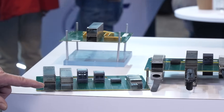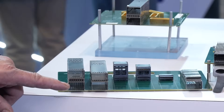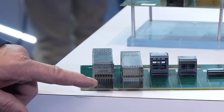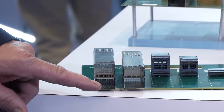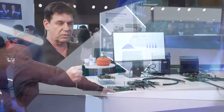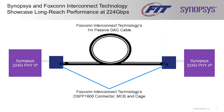If you look at the cage closely you can see there is a riding heatsink between the upper and lower port for better thermal performance. What we're providing to Synopsys is our OSFP 1x1 solution with cage and connector, as well as our one meter passive DAC cable for testing with Synopsys.